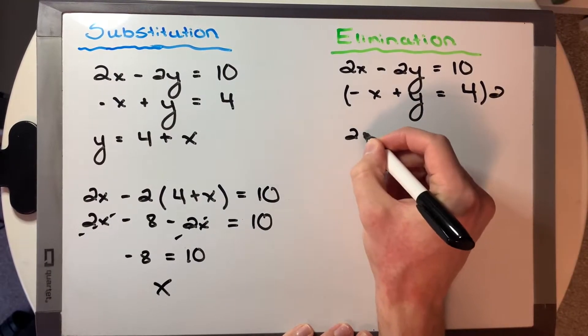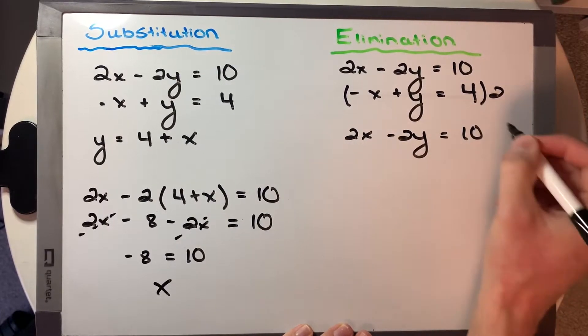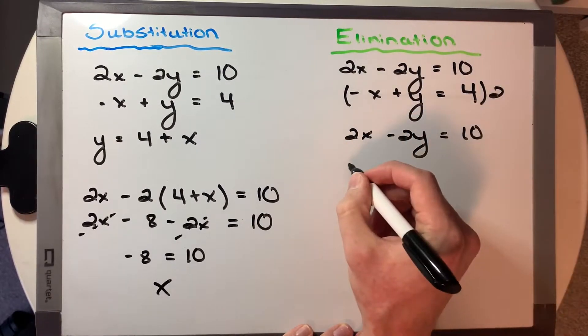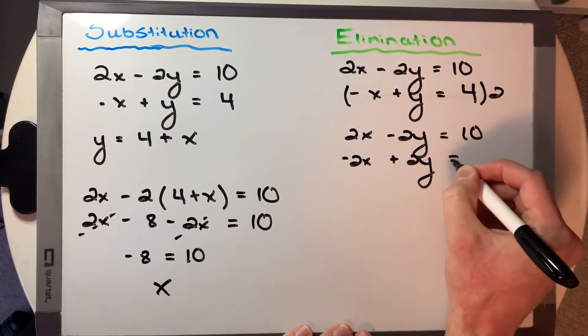So now rewriting both those equations, we have 2x minus 2y equals 10. And then we'll expand the 2 to all of those. So we say negative 2x plus 2y is equal to 8.